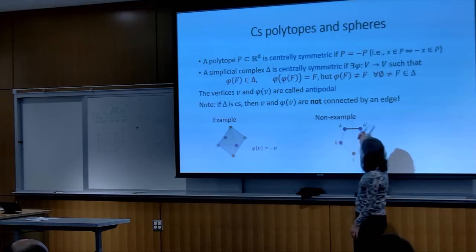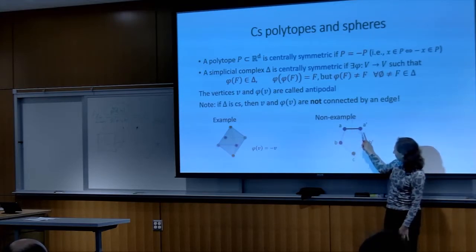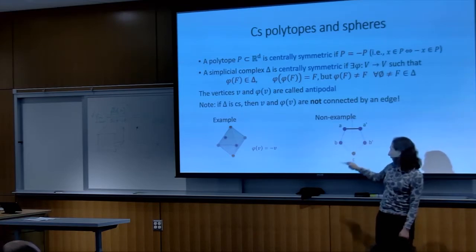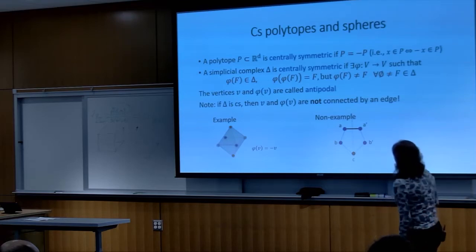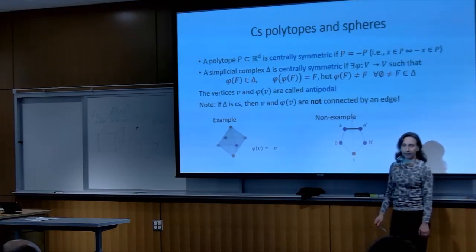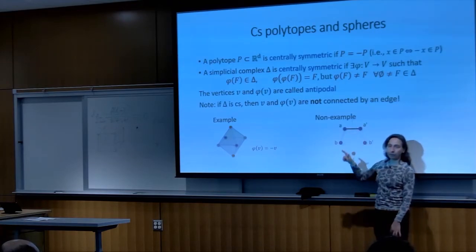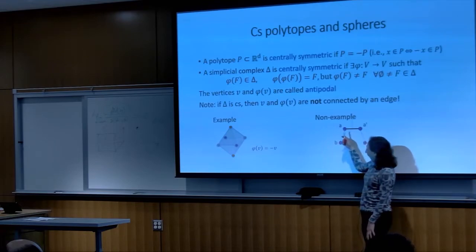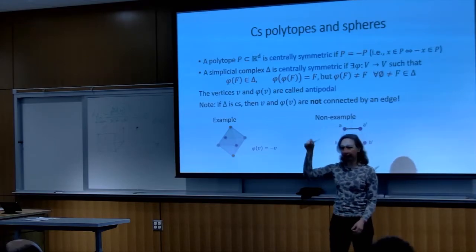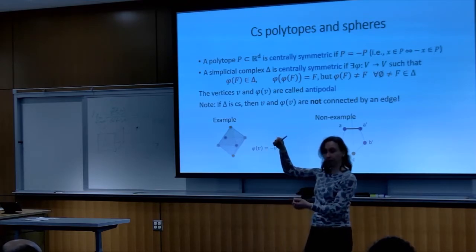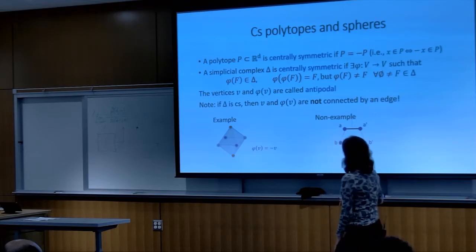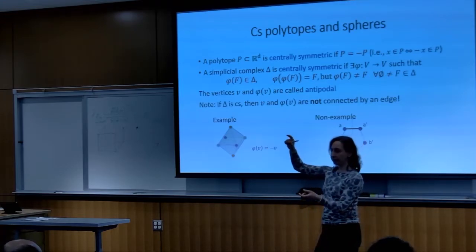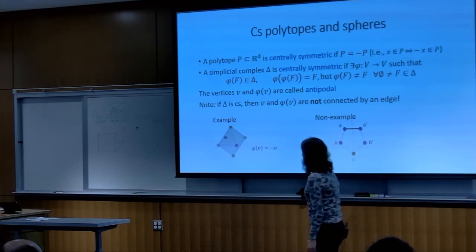Here is a non-example: a pentagon with a map sending A↔A', B↔B', and fixing C. This fails because C is a fixed vertex, and also the edge between A and A' would map to itself — violating the free involution condition. A centrally symmetric complex is called k-neighborly if any k vertices, no two of which are antipodal, form a face. The cross polytope — the convex hull of ±e₁, …, ±e_d in R^d — is the analog of the simplex. It is always d-neighborly in the centrally symmetric sense.